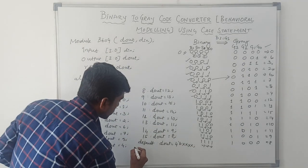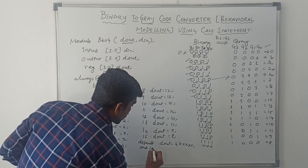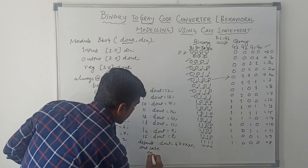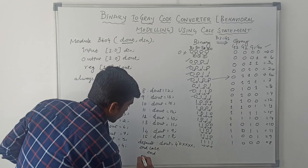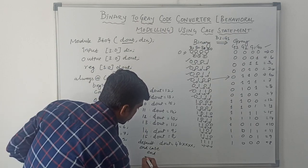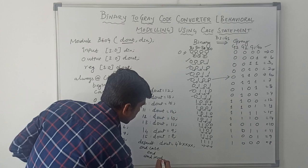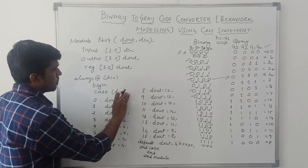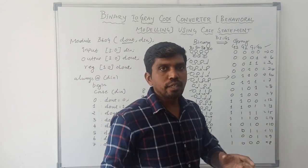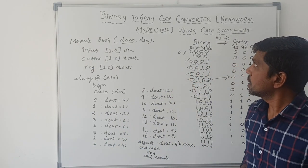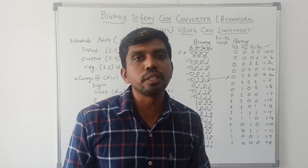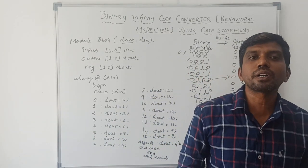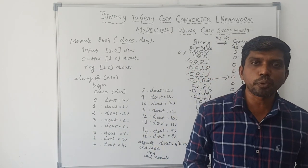Finally we close the program: endcase, then end, then endmodule. This is the simple way to write a binary to gray code converter using behavioral model with the help of a case statement. I hope you understand the concept well. If you are watching for the first time, kindly subscribe and support us to make more videos. Thanks for watching.